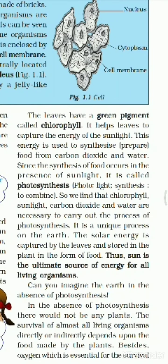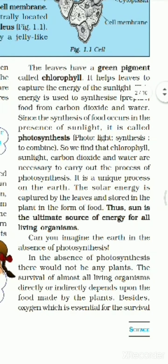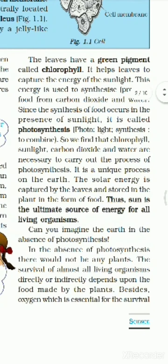The leaves have a green pigment called chlorophyll. Chlorophyll captures the energy of sunlight, and this energy is used in the photosynthesis process to prepare food from carbon dioxide and water.